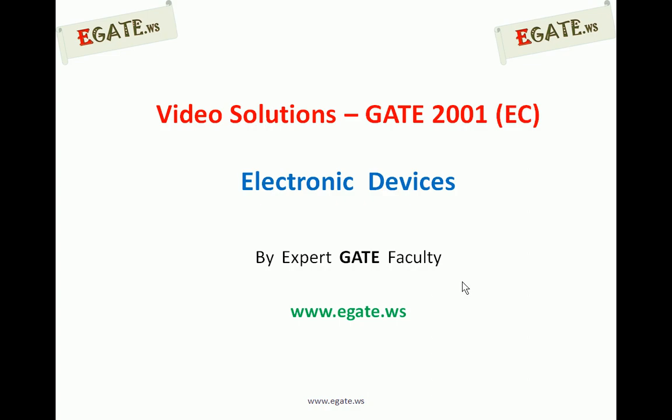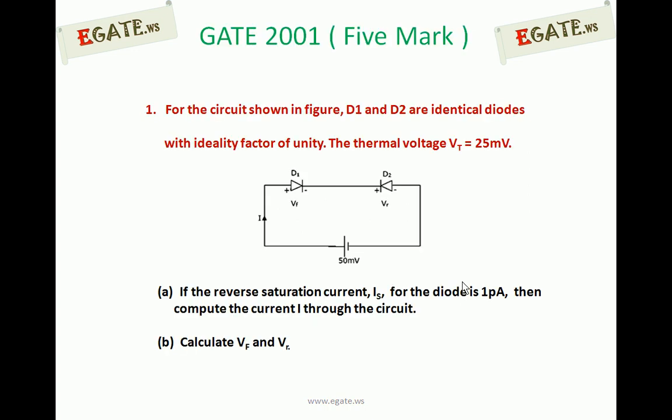Hello, we are discussing GATE 2001 ECE paper and the topic is Electronic Devices. This is a 5 mark question from GATE 2001. For the circuit shown, D1 and D2 are identical diodes with ideality factor of unity. The thermal voltage Vt is equal to 25mV.